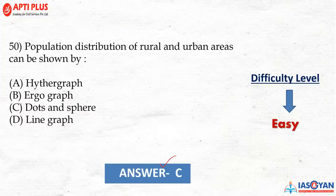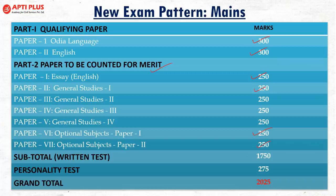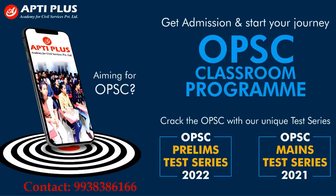That covers all 50 questions. We will look at questions 51 to 100 in part two. Before that, let me explain the new examination pattern recently released by OPSC. The qualifying papers are Odia language (300 marks) and English language (300 marks). For the merit list, there are four General Studies papers and one optional. Essay comprises 250 marks, each General Studies paper is 250 marks, and the optional paper is 250+250. The total written marks are 1,750, plus a personality test of 275 marks, making a grand total of 2,025.